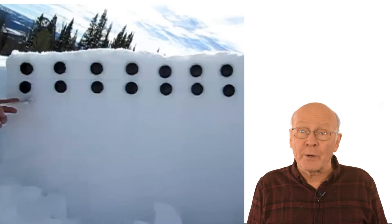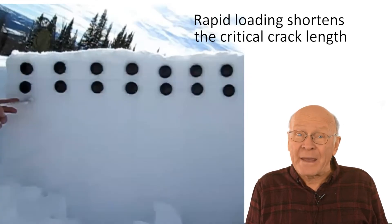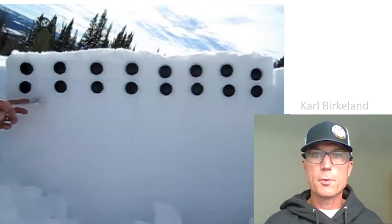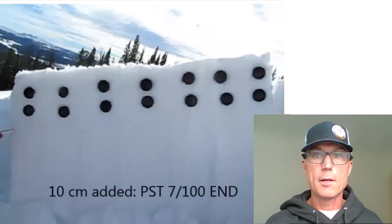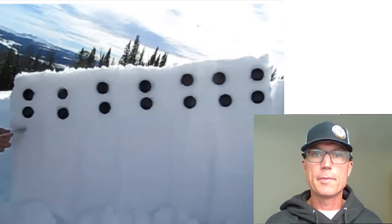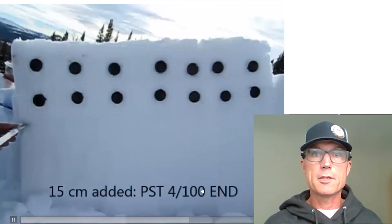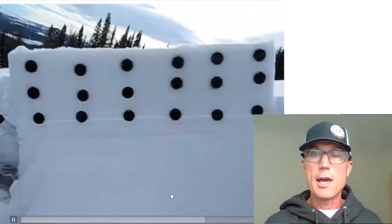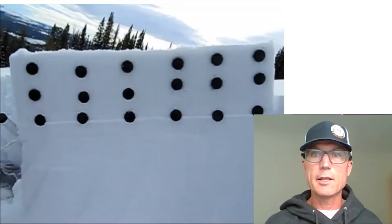Here are some experiments by Carl Berkland using the propagation saw test. Carl explains how recent loading can shorten the critical length of the saw cut, making avalanches more likely. He added varying amounts of disaggregated snow to an existing snowpack and allowed it to settle for about an hour. The pre-existing snowpack had about 10 centimeters of low density snow on top of the surface hoar layer. Adding snow shortened the critical crack length — with 15 centimeters of snow added, the PST cut length was only 4 centimeters, and with 20 centimeters added, a 2 centimeter critical crack length triggered propagation. So adding the snow created increasingly reactive conditions.